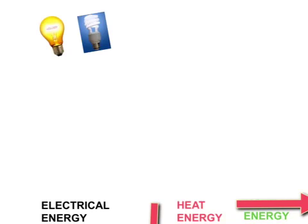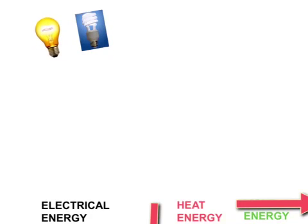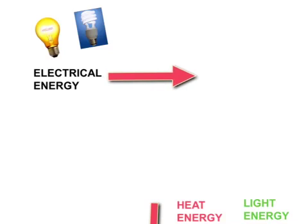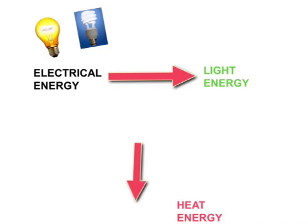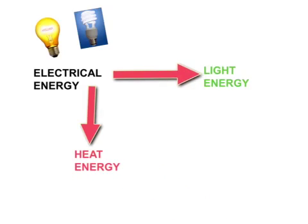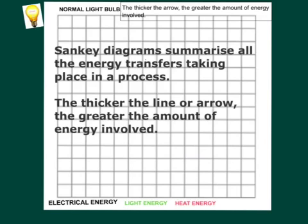Before you can calculate the efficiency, first of all you need to identify the energy transfers taking place. For example, we've got two light bulbs here — an ordinary light bulb and an energy saving light bulb. Electrical energy is going into these bulbs. The useful energy transfer is light energy and the waste, unuseful energy transfer is heat energy. The useful energy transfer is represented by a horizontal arrow, and the waste energy transfer is represented by a vertical arrow, or sometimes a curved arrow.